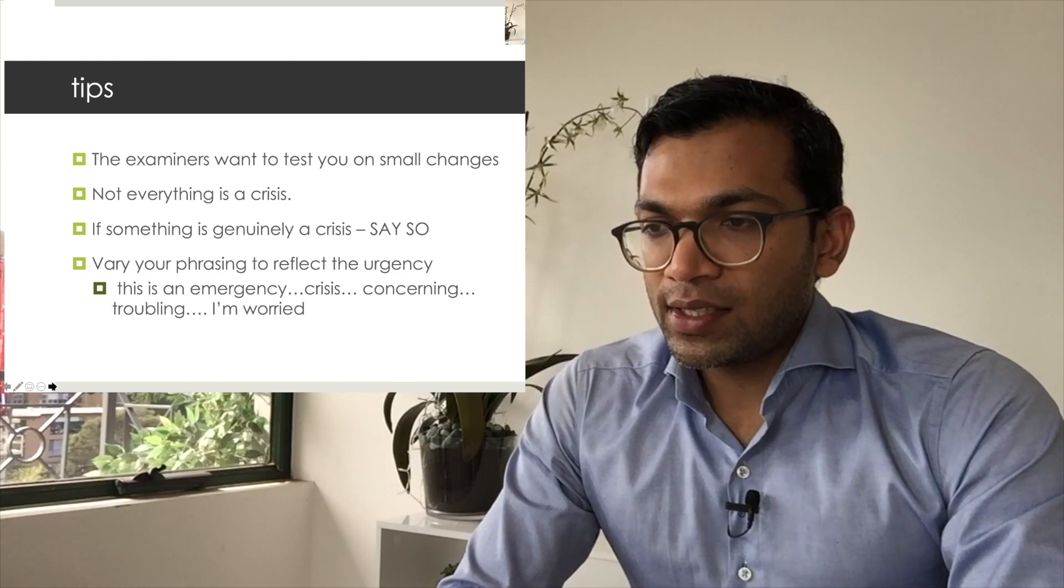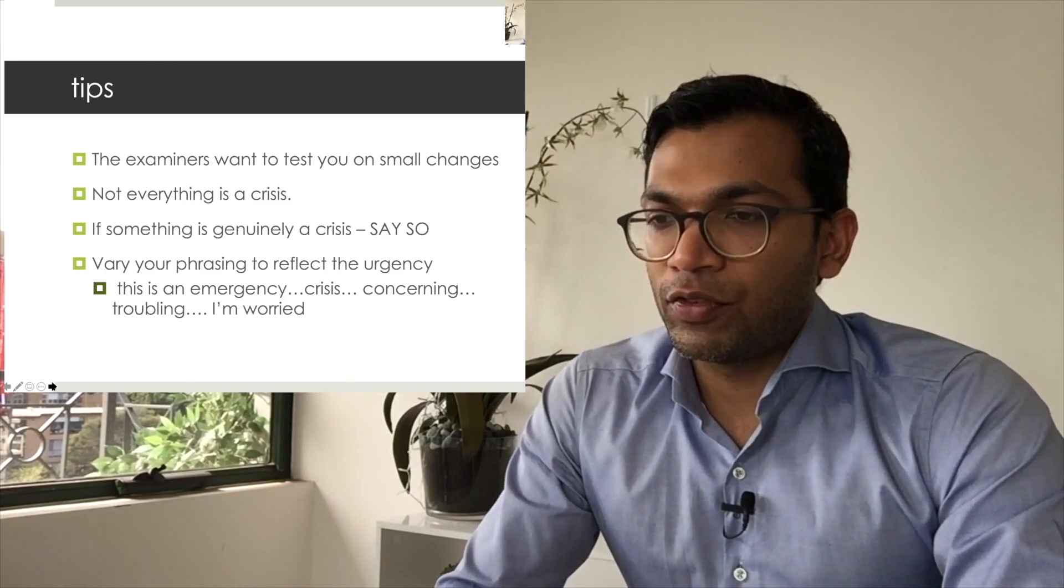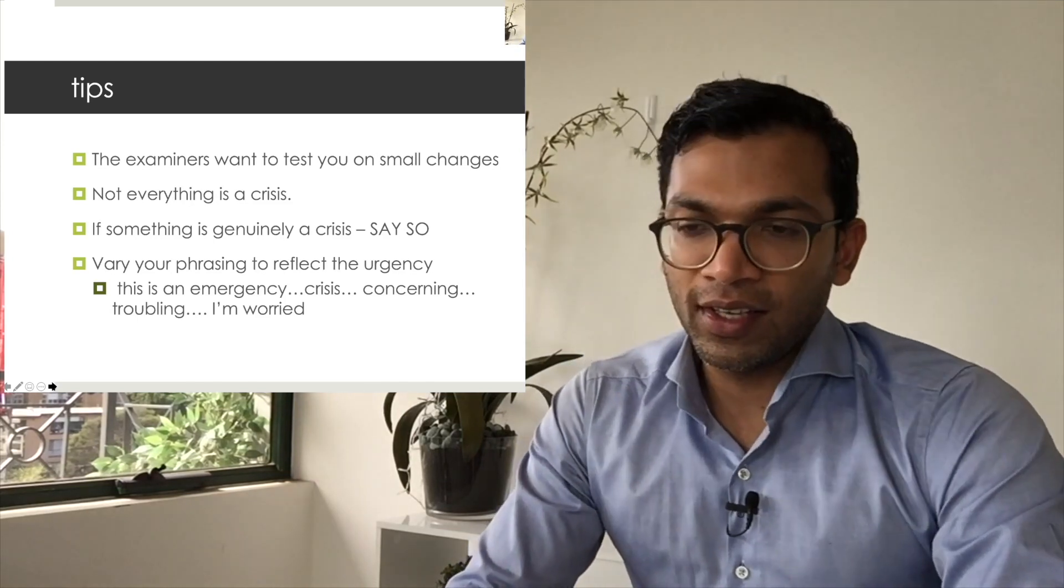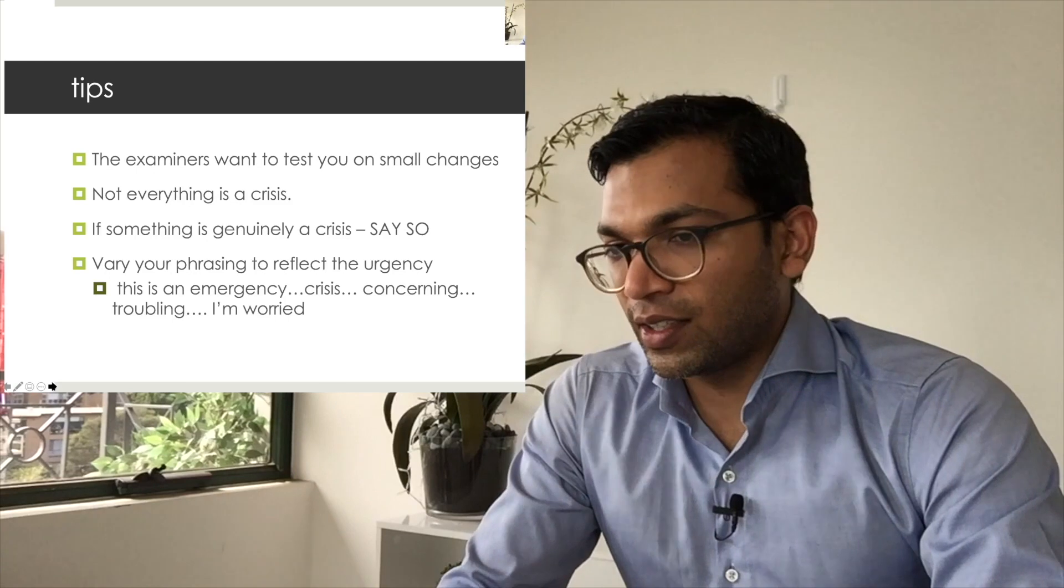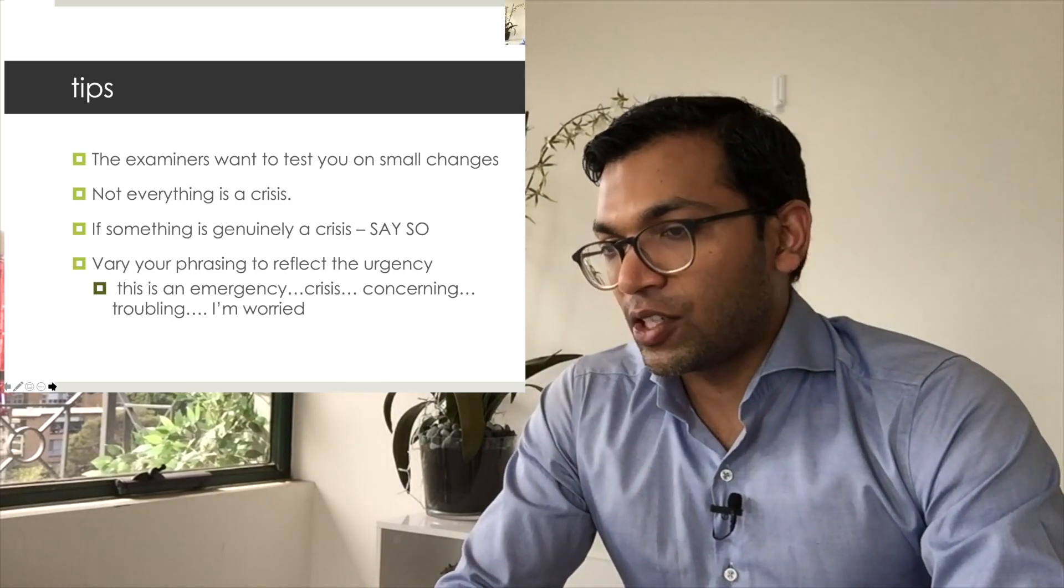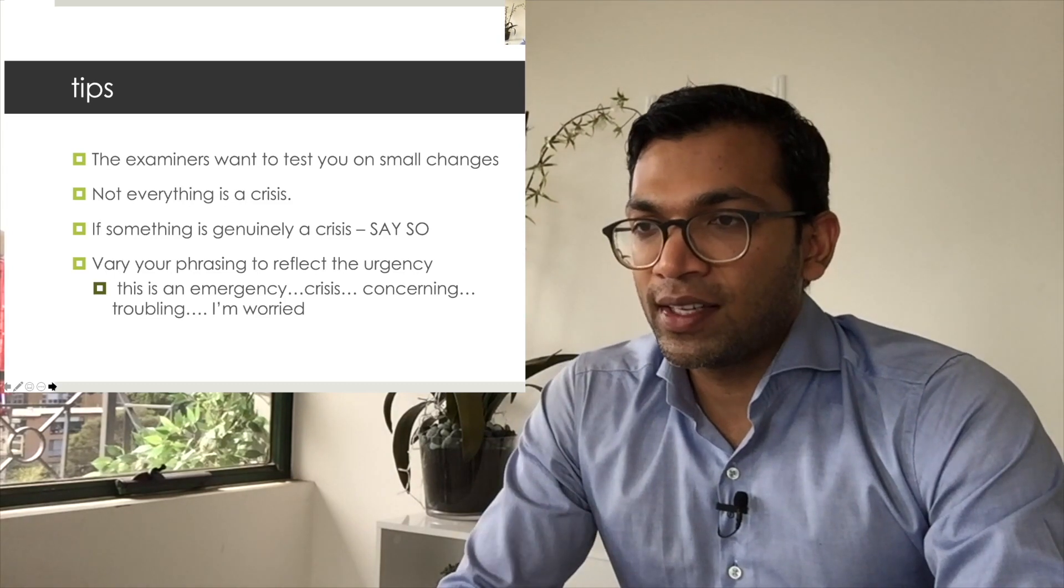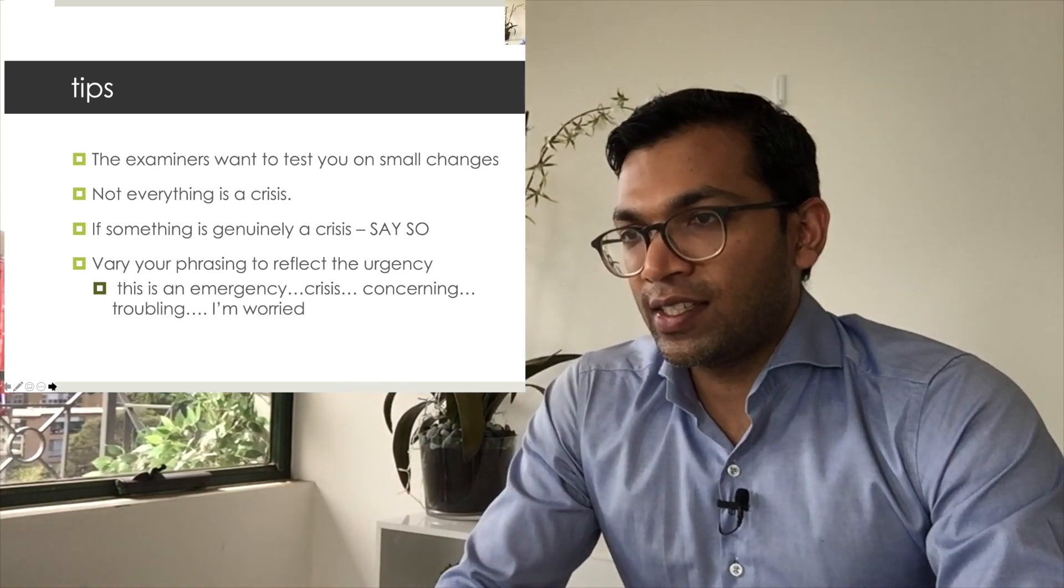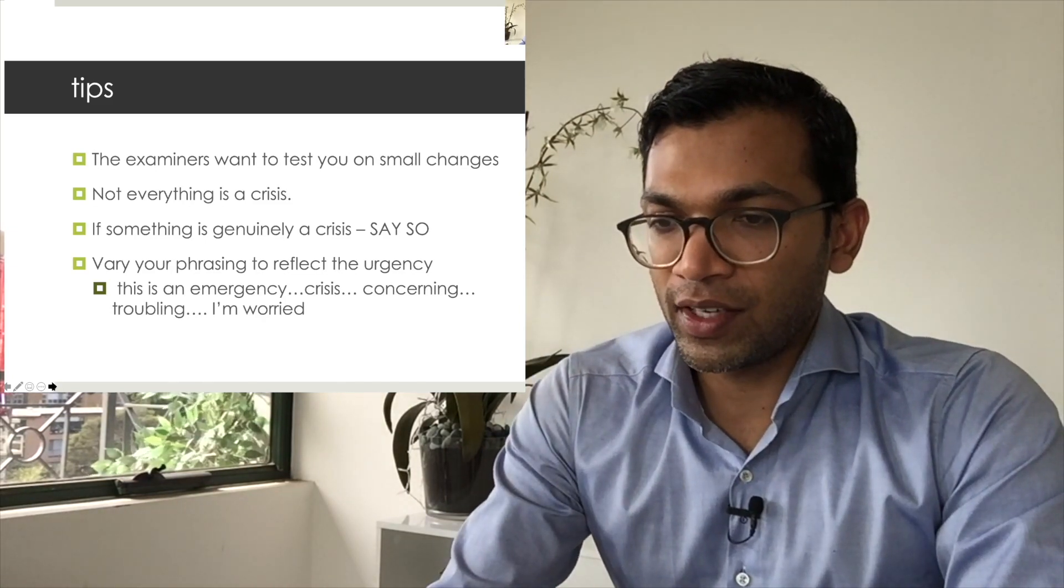If something is a crisis, it is important to say so, but also if it isn't a crisis you can vary your phrasing to reflect the urgency. Get comfortable using different words to make things not a cliche. This is an emergency, there's a crisis, this is concerning, this is troubling, I'm genuinely worried about this. Try to vary your phrasing as it happens to you in real life in this viva.